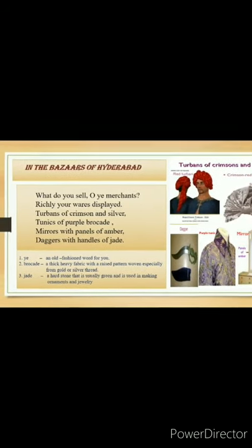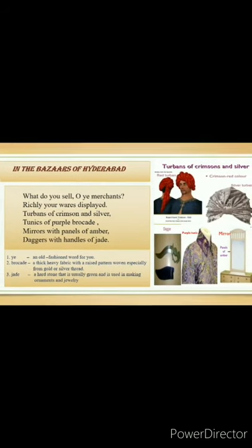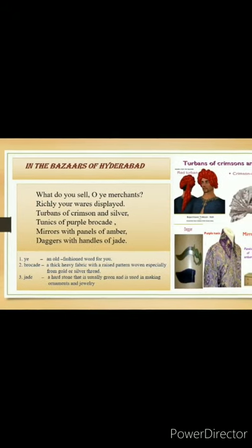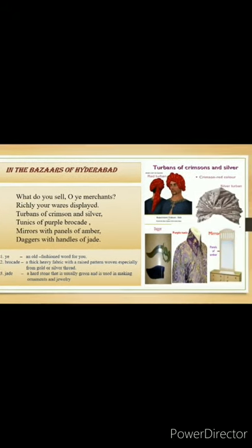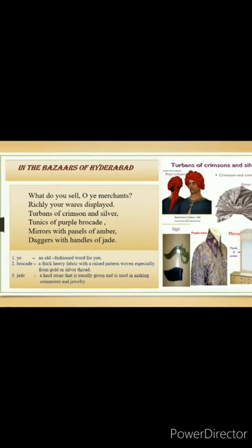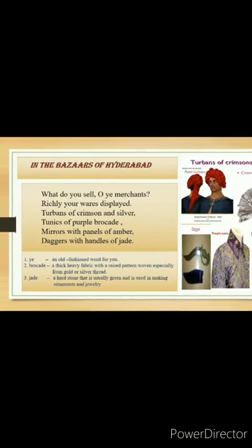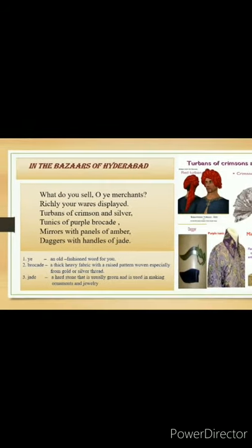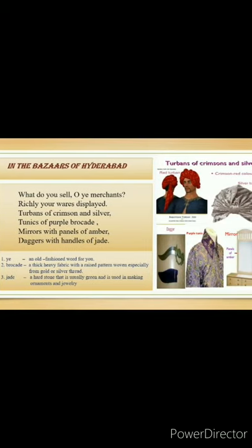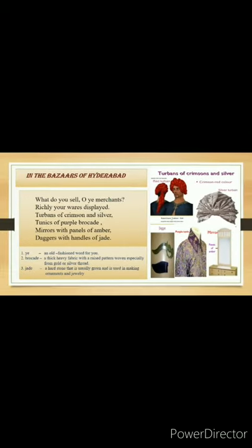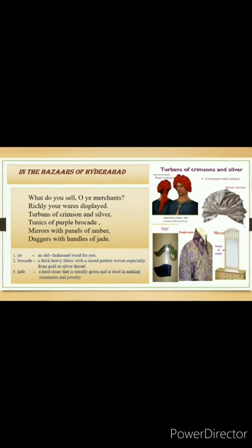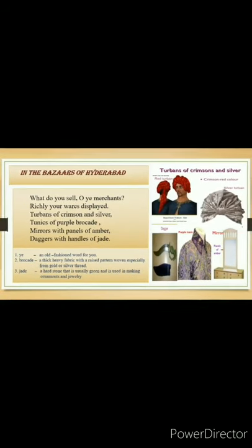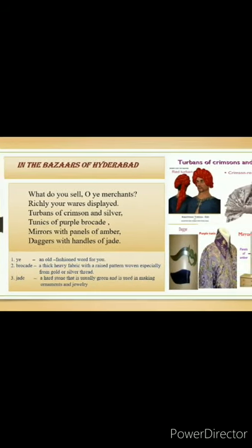Let's see the difficult words' meanings. Number 1: 'O' — that means an old-fashioned word for 'you'. Number 2: Brocade — that means a thick heavy fabric with a raised pattern woven especially from gold or silver silk thread. Number 3: Jade — that means a hard stone that is usually green and is used in making ornaments and jewelry.